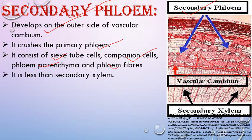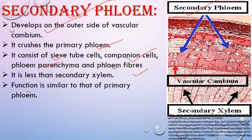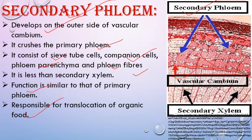Secondary phloem formed is less in quantity because the activity of vascular cambium is less towards the outer side compared to the inner side. The function of secondary phloem is similar to that of primary phloem — phloem helps in translocation of food material, so secondary phloem is responsible for translocation of organic food.